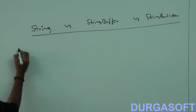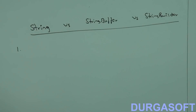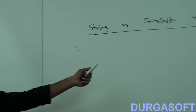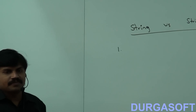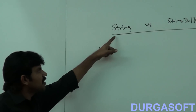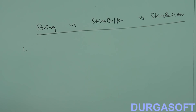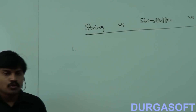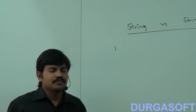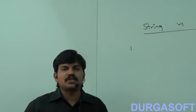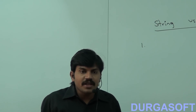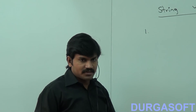When we should go for String: String objects are immutable, while StringBuffer objects are mutable. If the content is fixed and won't change frequently — wherever immutability is required — then we should go for the String concept.